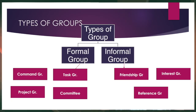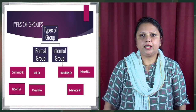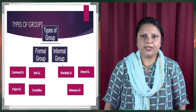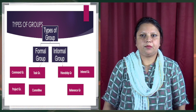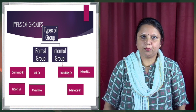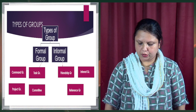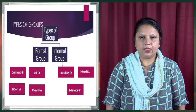From this diagram, you can see there are different types of groups. Basically, groups can be categorized into formal groups or informal groups. Formal groups can be subdivided into four types: command group, task group, project group, and committee. In case of informal groups, they can be categorized into three subdivisions: friendship group, interest group, and reference group. We will be discussing all of these.